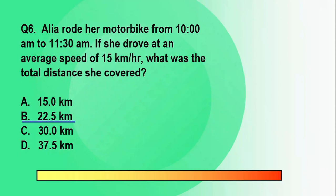The correct answer is letter B, 22.5 km. Note that the formula for distance is D equals rate times time. 15 km per hour multiplied with 1.5 hours, that's equal to 22.5 km.